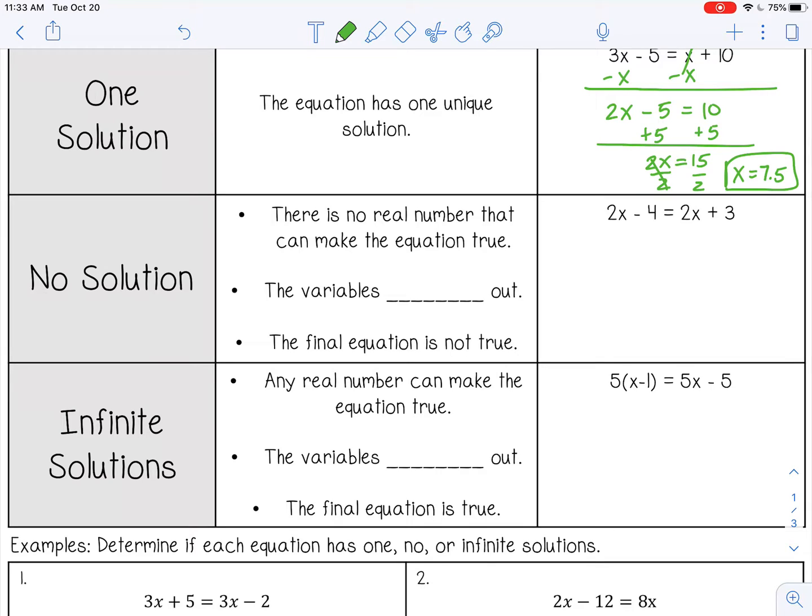The next one is no solution. When an equation has no solution, it means there's no real number that can make the equation true. And this happens when the variables cancel out, and the final equation is not true.